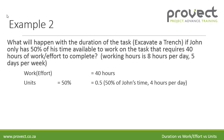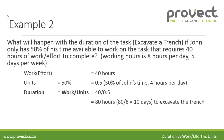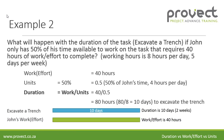The duration equals work divided by units: 40 divided by 0.5 equals 80 hours. Eighty hours divided by eight is 10 days. So it will take John 10 days to excavate the trench — compared to example one where, at 100% of his time, it took 40 hours or five days. So to excavate the trench will take 10 days, that is two weeks, and the effort is still 40 hours.